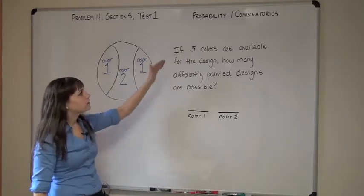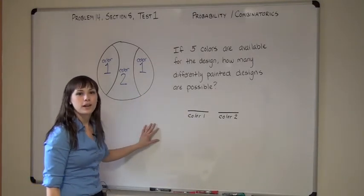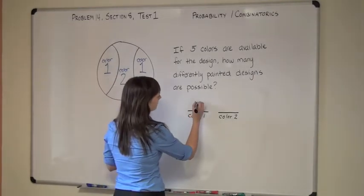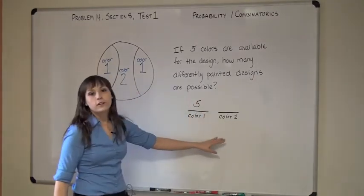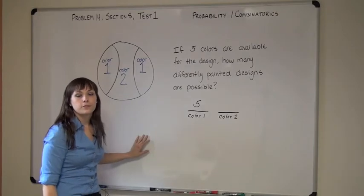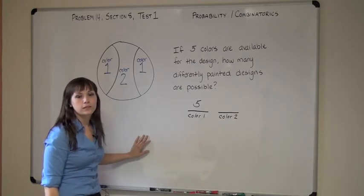So for color 1, we have five options because five colors are available. For color 2, we only have four options remaining because we've already used one of our colors for color 1.